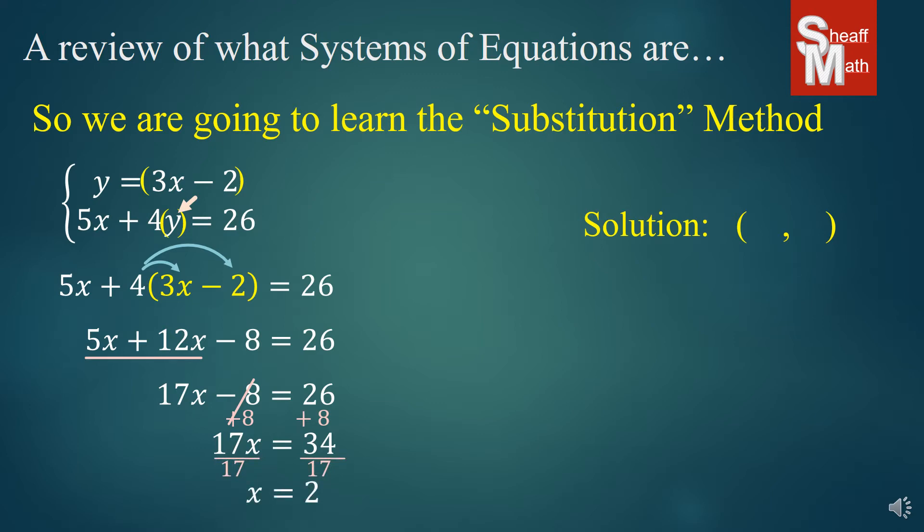If you look at the solution, we found our x, 2. But we have to find the y as well. Here is how we're going to do it. I want you to pick one of those equations. I'm going to give you a helpful hint. Always pick the one in slope intercept form. That's the hint of the day. So y equals 3x minus 2. That's the one I'm going to use.